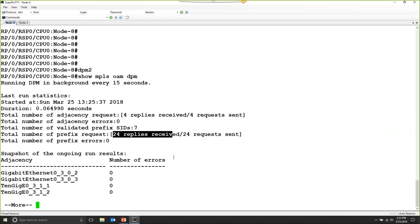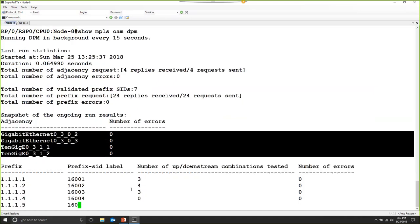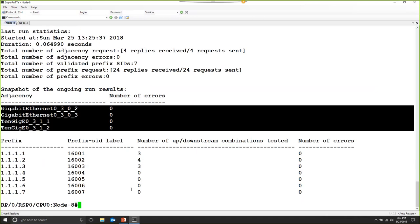A little bit further down below, we can see the four interfaces where the adjacency tests were conducted. And lastly, we can also see the actual breakdown of the prefix seed tests.